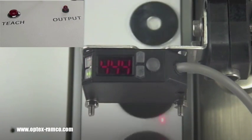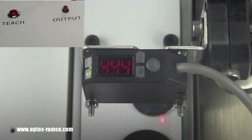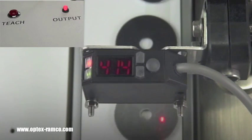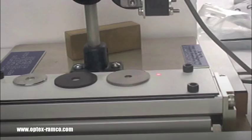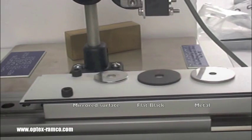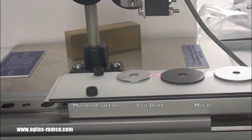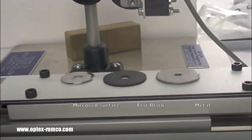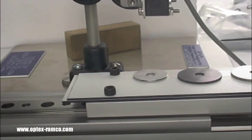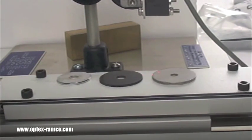One really amazing thing about this sensor is its ability to detect a lot of different colored materials and textured materials, all at the same sensing distance. In this example, I've used a mirrored surface washer, a rubber washer, and a metal washer, and I get virtually the same value on the display.